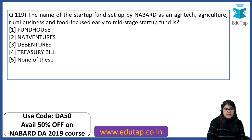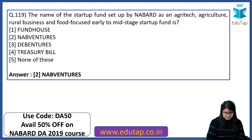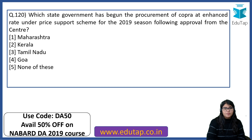The name of the startup fund set up by NABARD as an agritech, agriculture, rural business and food-focused early-to-mid stage startup fund is — please star mark this important question. Which state government has begun procurement of copra at enhanced rate under the Price Support Scheme for the 2019 season following approval from the centre? The right answer is Tamil Nadu.